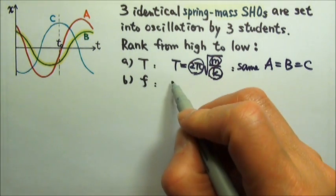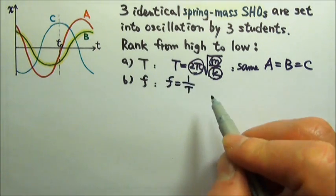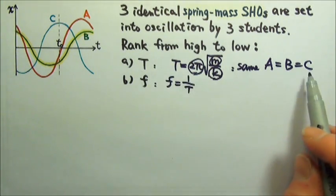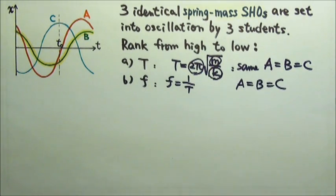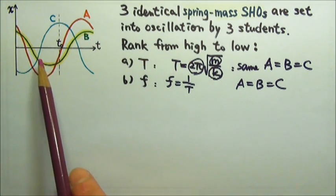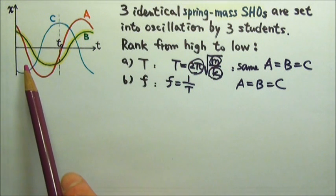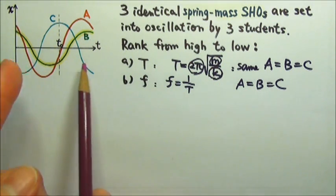And for frequency, how do we find frequency? Frequency is one over period. So if periods are all the same, that means the frequency would also be the same for all three. The graphs look like this just because they are out of phase. They were set into oscillation at different times, so the graphs are just shifted.